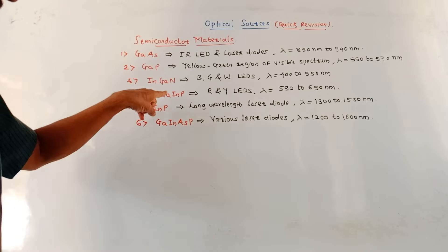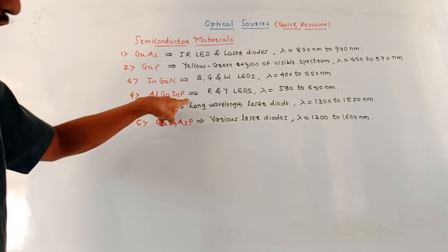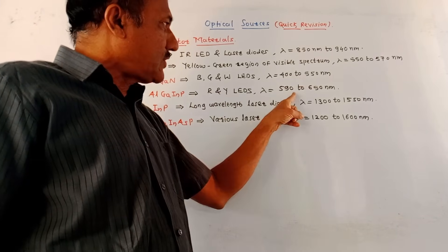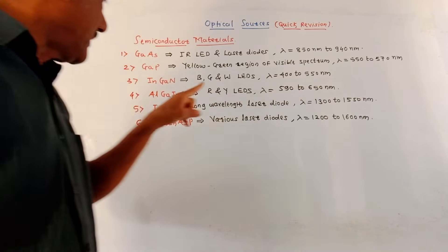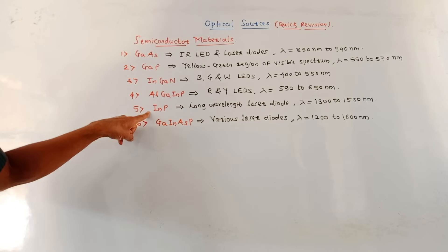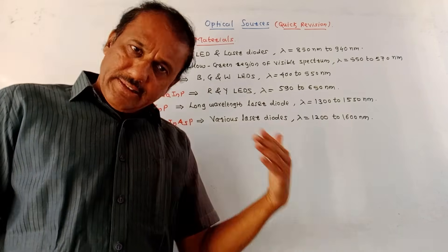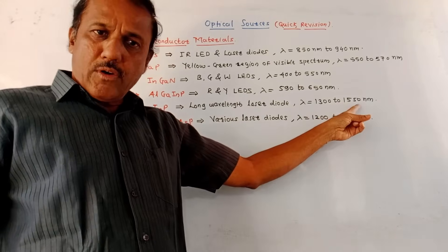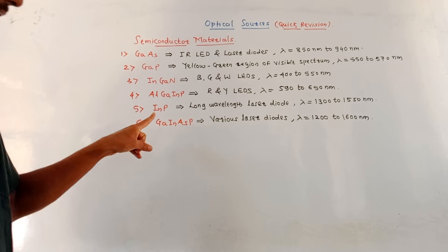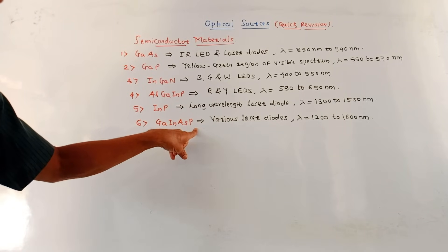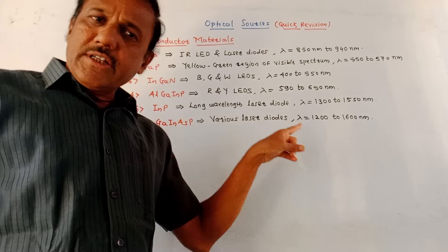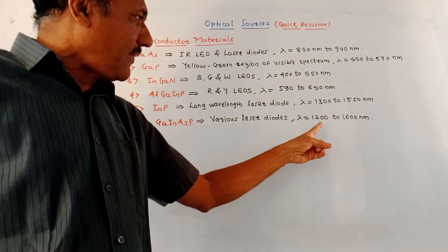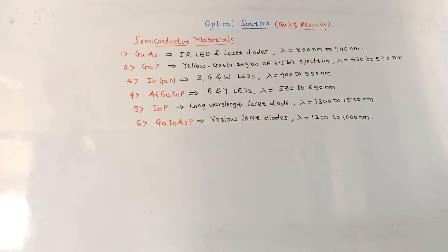Next is aluminium gallium indium phosphide — it is used for red and yellow LEDs, wavelength range 590 to 650 nanometers. Next is indium phosphide — it is used for longer wavelength laser diodes, wavelength range 1300 to 1550 nanometers. Then gallium indium arsenide phosphide — it is used in various laser diodes for generation of laser beams, wavelength range 1200 to 1600 nanometers.